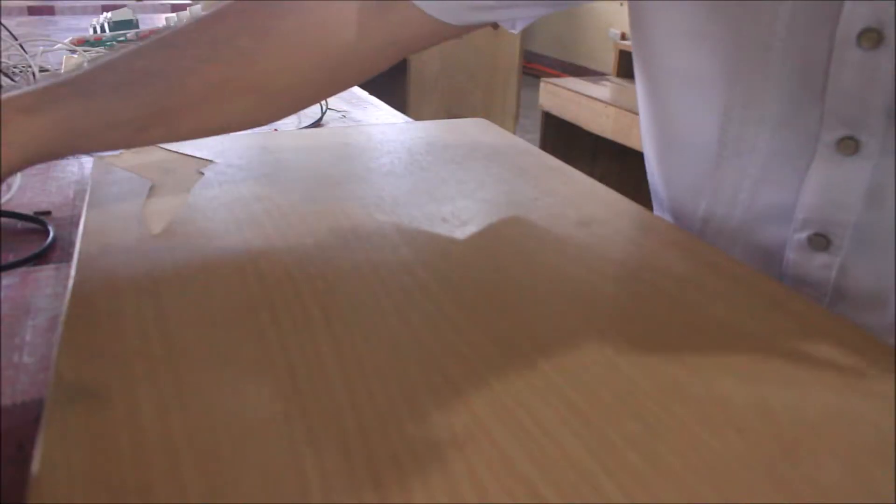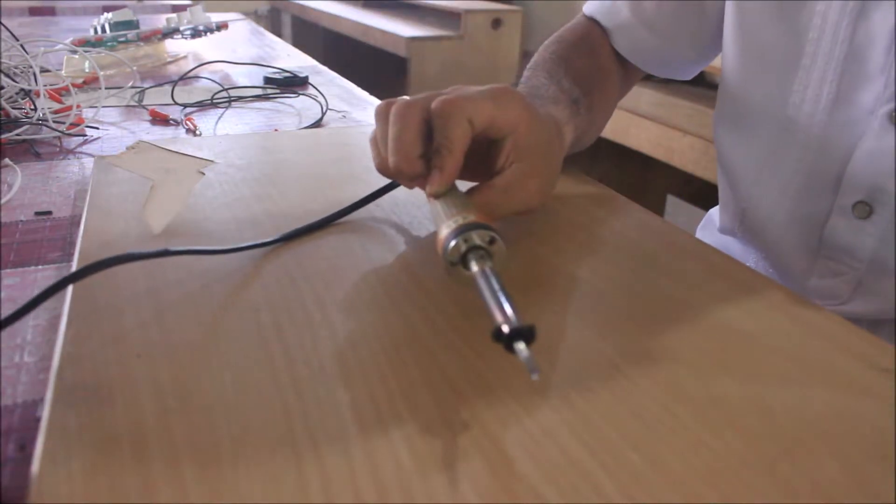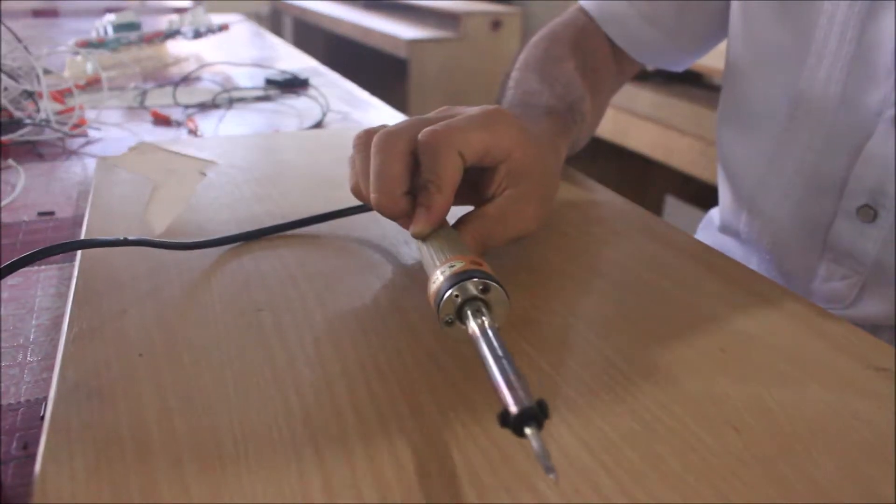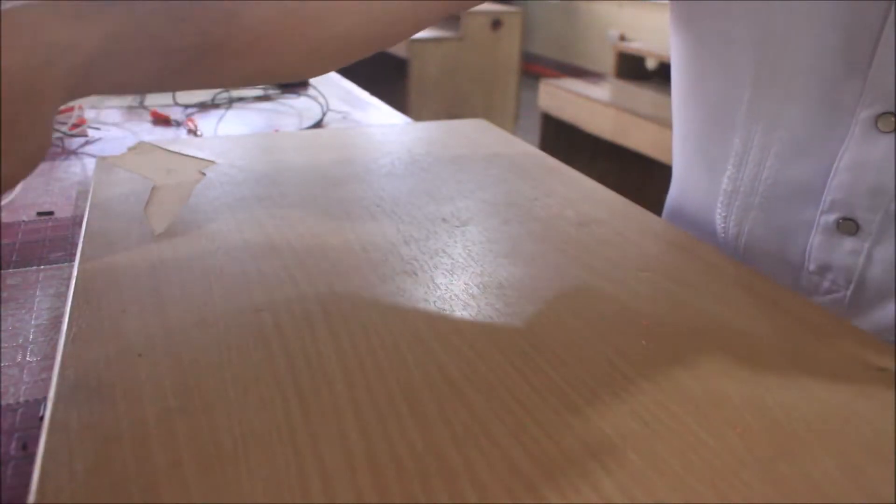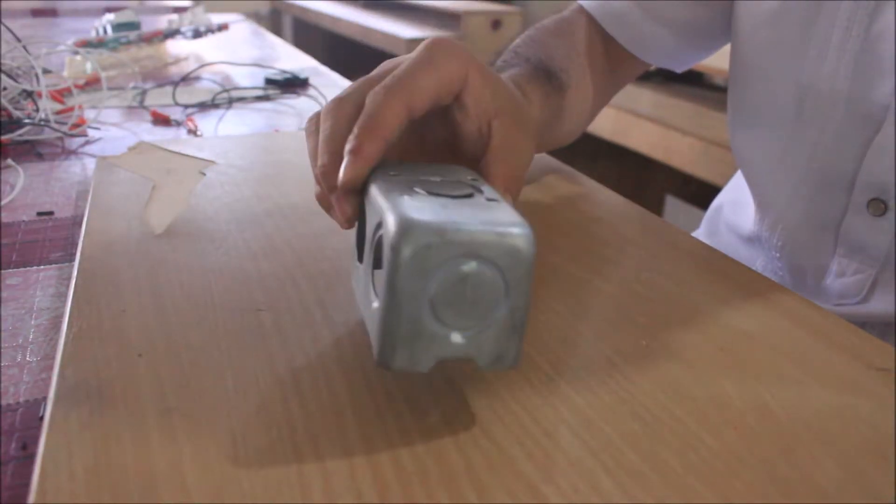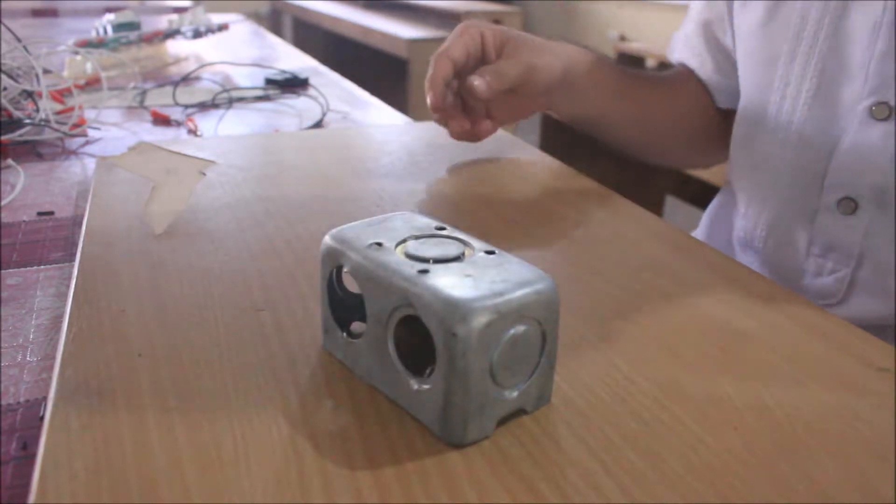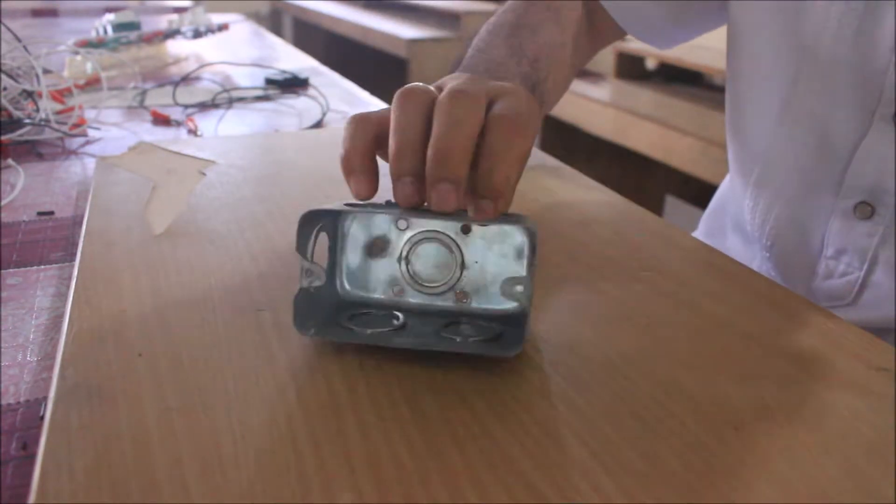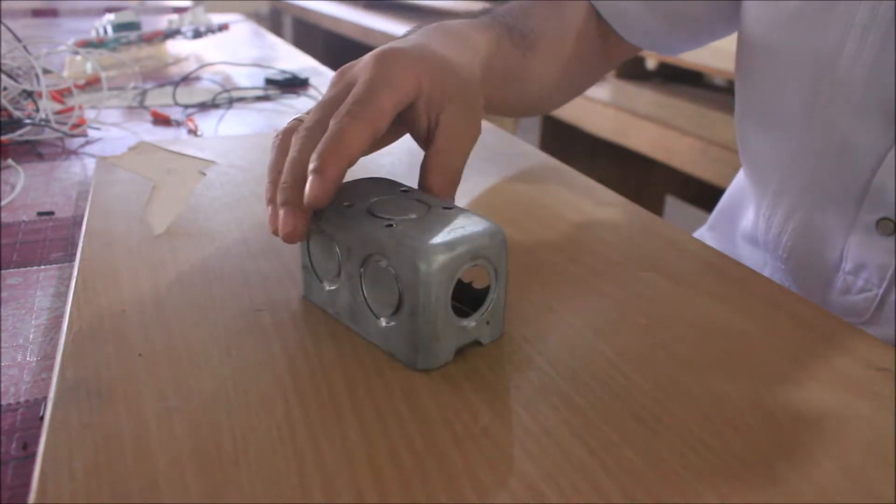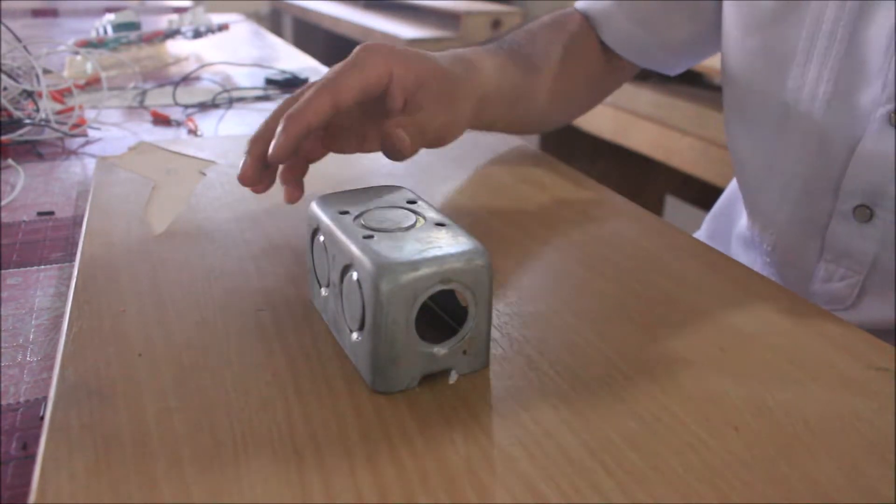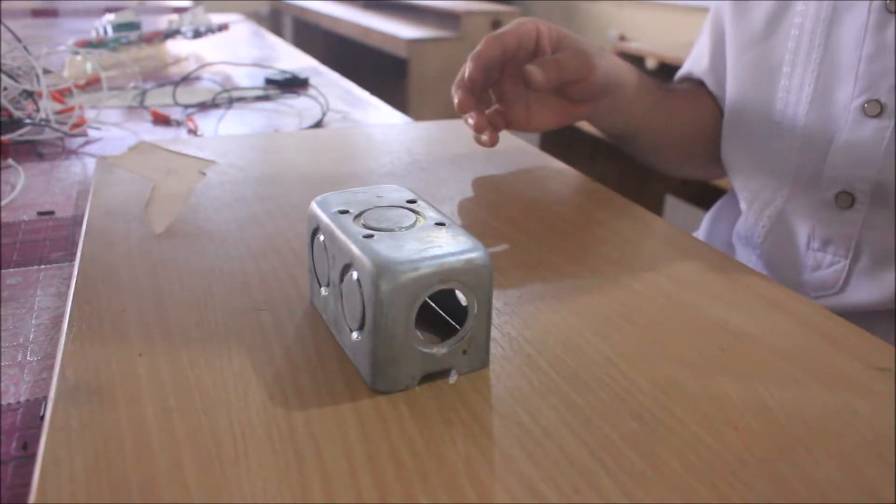This time I will be showing you the tools and materials that I'm going to use. First we have the soldering iron, next is a utility box metallic type. I will be utilizing the holes in the utility box for the tips of my banana jack.